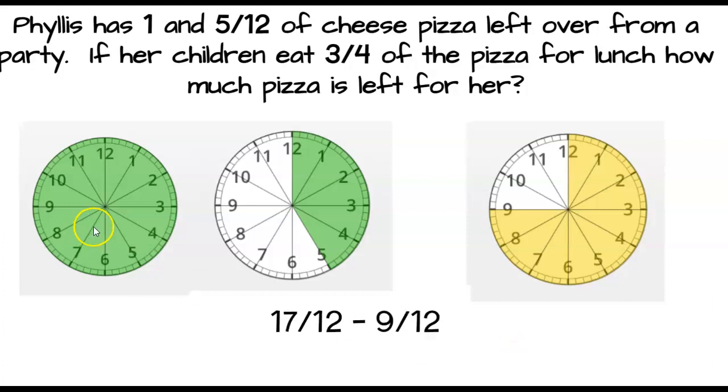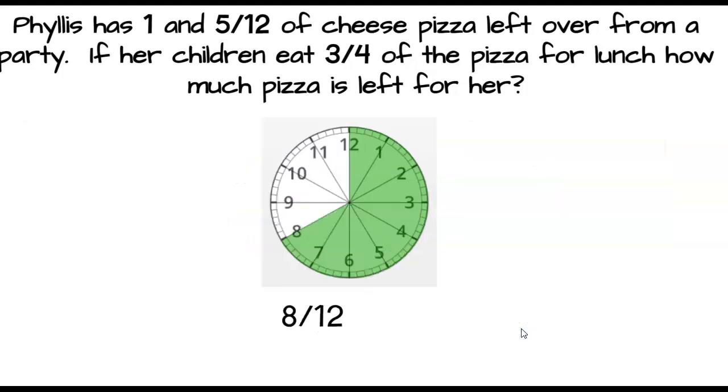So now I have 17/12 over here. I count my 12/12 in my one whole plus my 5/12 gives me 17/12. And I'm going to subtract 9/12. Makes it a lot easier. All you have to do is 17 minus 9. Gives us our 8/12. 8/12 is a great fraction. But what if they were bigger pieces? Would they still be 12ths?